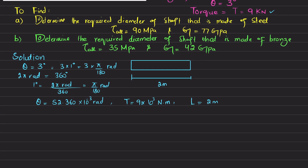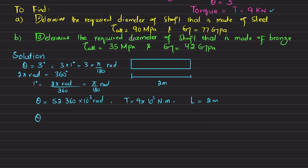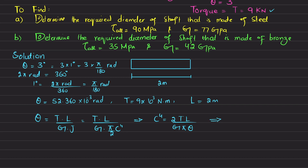The angle of twist formula is θ = TL / (GJ). For a solid circular shaft of radius C, the polar moment of inertia J = π/2 · C⁴. Substituting and solving for C gives: C⁴ = 2TL / (G · π · θ). This is the radius based on the angle of twist constraint.